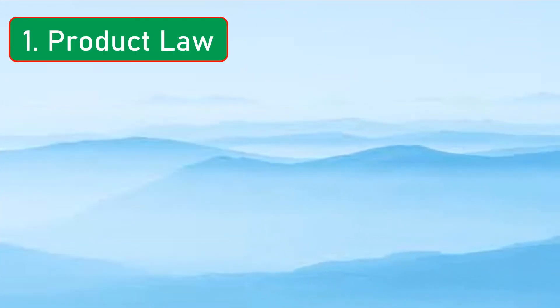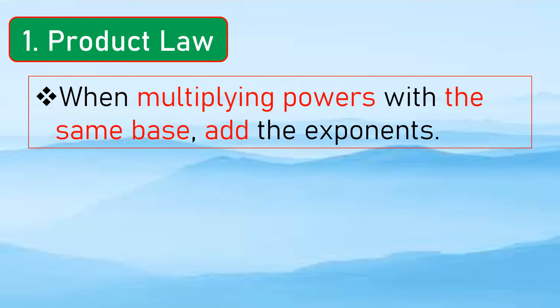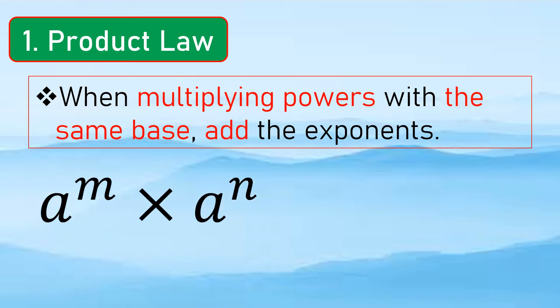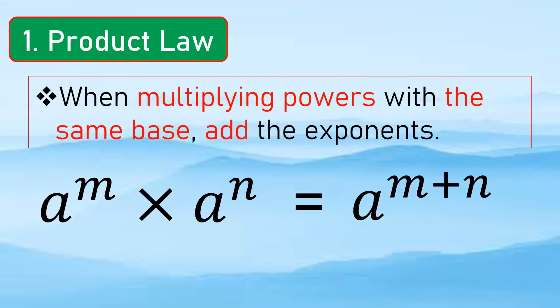So let us have the product law. It states that when multiplying powers with the same base, add the exponents. So if we have a to the m times a to the n, we copy the same base and add the exponents, giving us a to the m plus n.